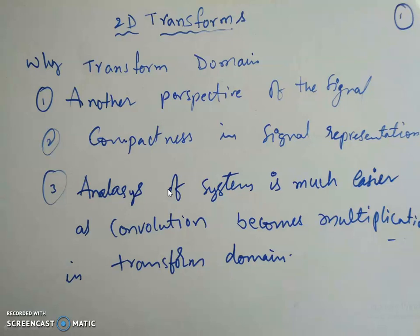If I take the same sinusoidal signal and analyze it in the frequency domain, the amplitude is non-zero only at a particular frequency if it is a single-tone sinusoidal signal. All the other frequencies have magnitude zero. So if you see it in the time domain, it is a signal varying from minus infinite to infinite. In the frequency domain, it is simply a single point. This is what I mean by another perspective of the signal — it gives us a different view into the signal.